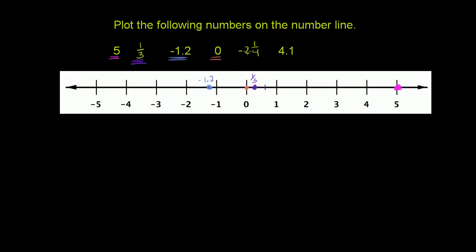Then we have negative 2 and 1/4. So let's go to negative 2. Negative 2 is here. And it's going to be more negative than negative 2. It's negative 2 and then another negative 1/4. So it's negative 2 and then we go 1/4 of the way to negative 3. So negative 2 and 1/4 is going to be right over here.